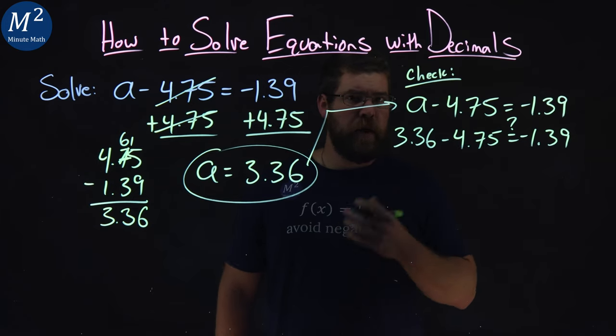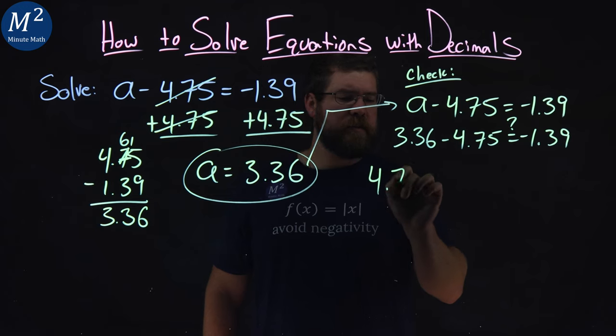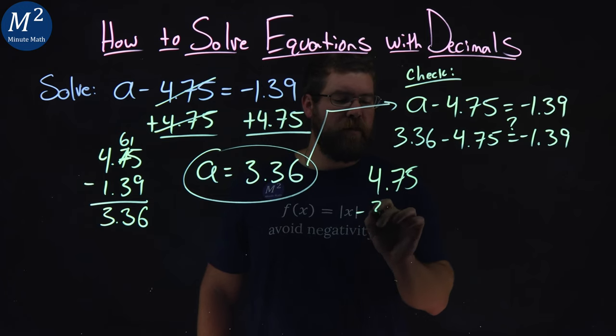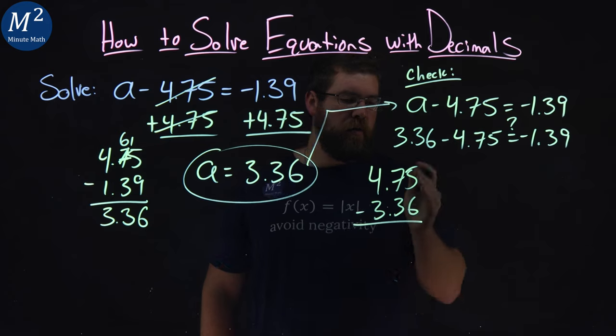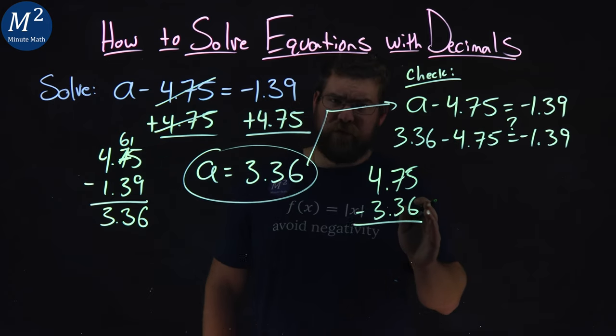knowing that it needs to be negative. So, to do that, we have 4.75 first, minus 3.36. From there, we're subtracting. Find a difference here.